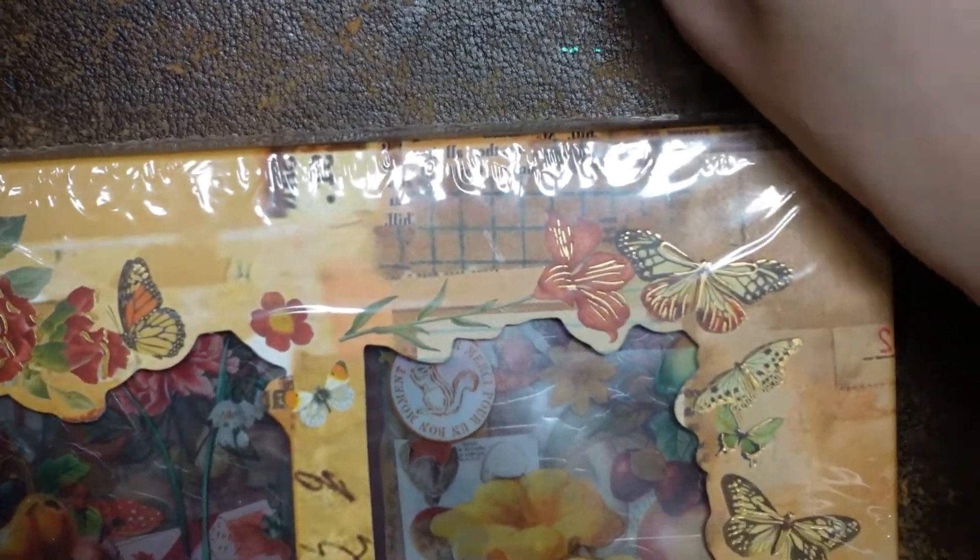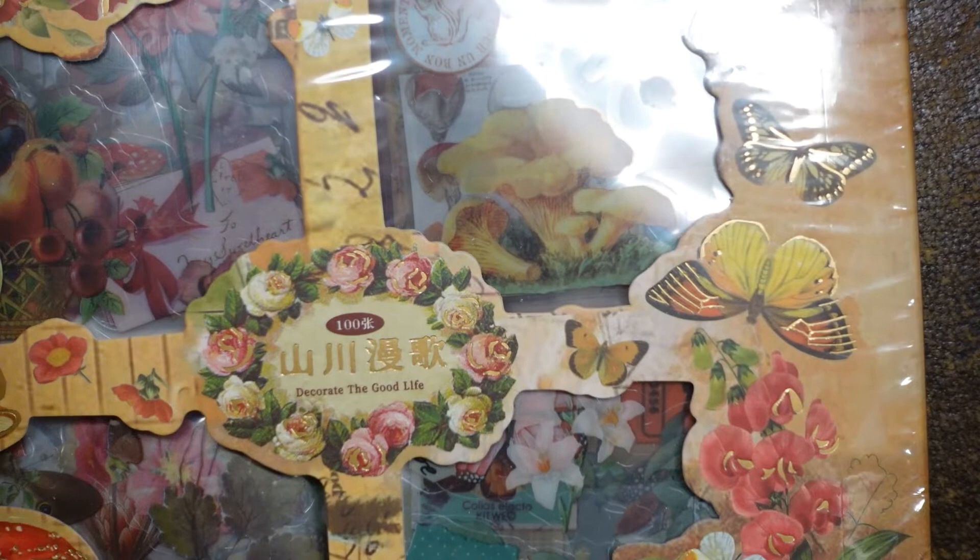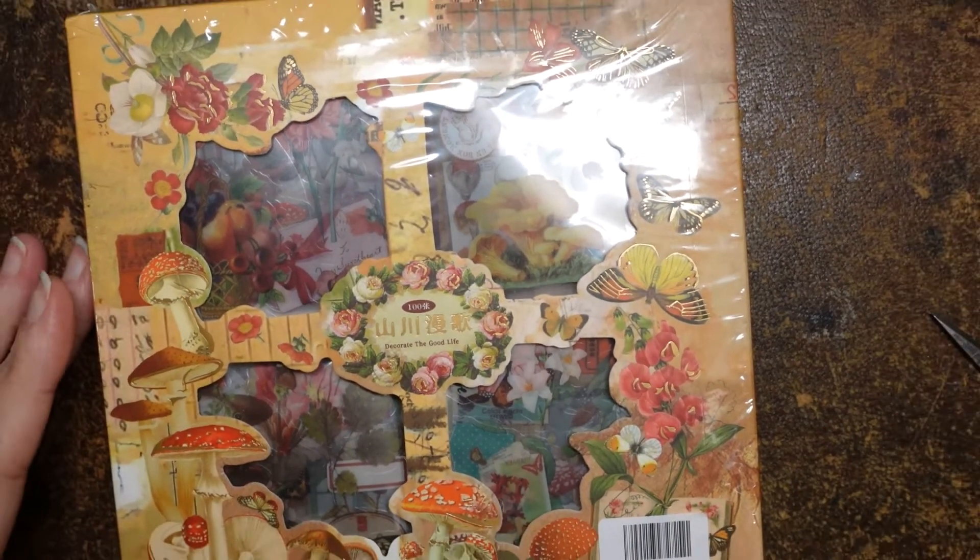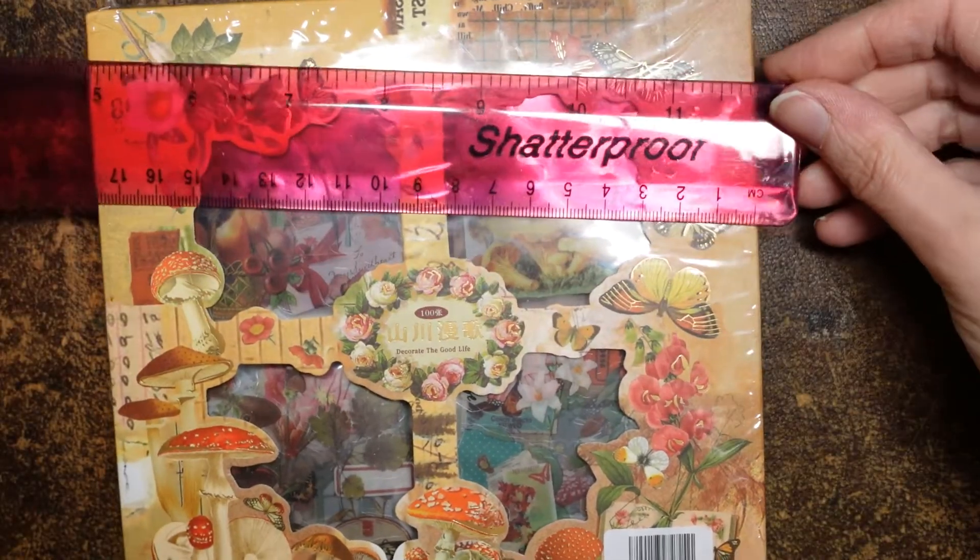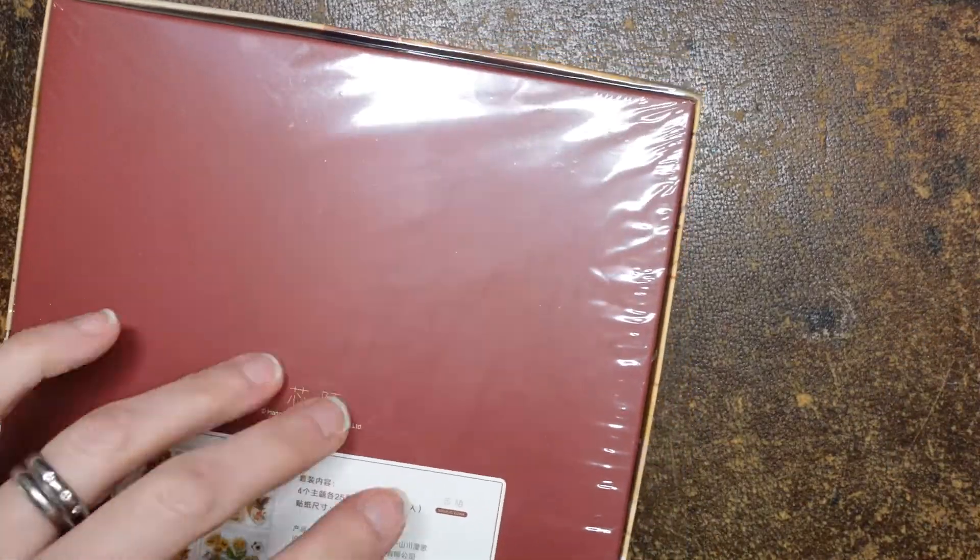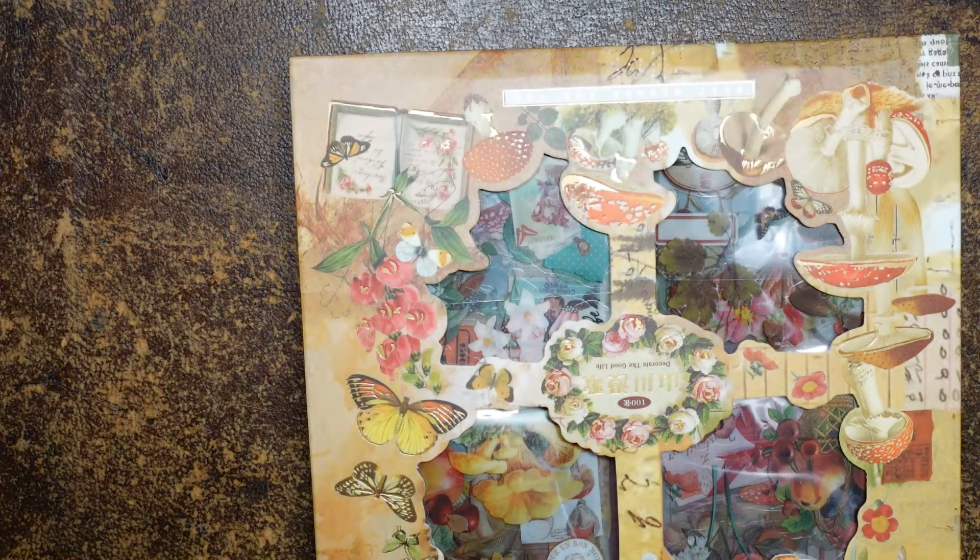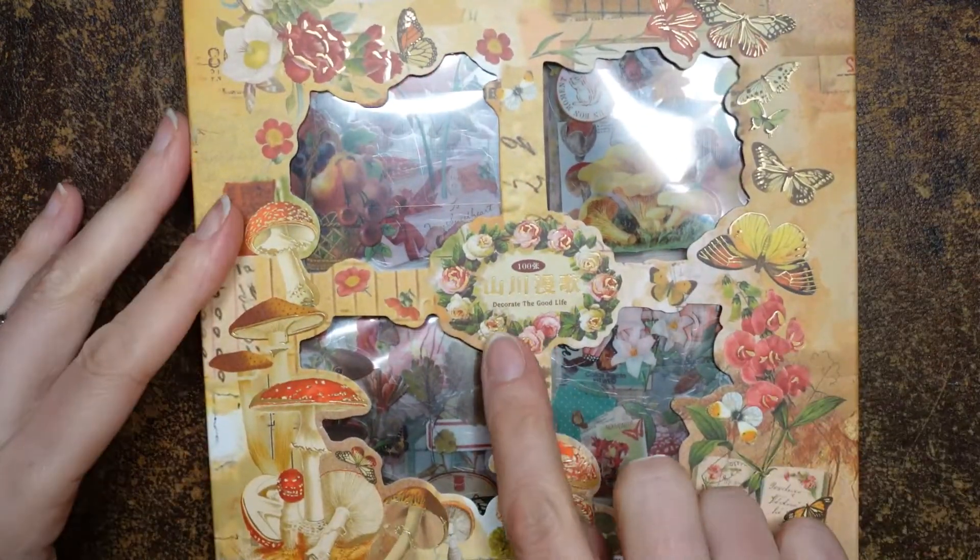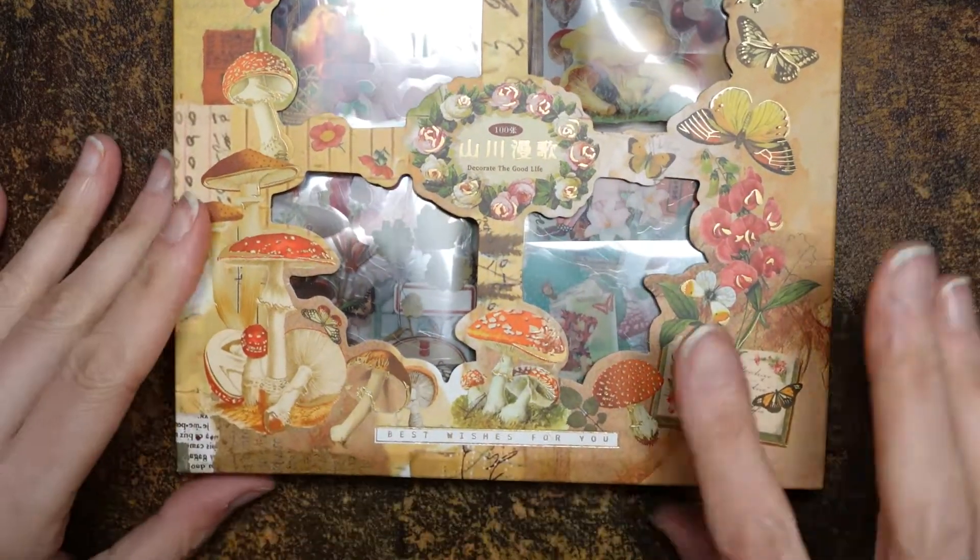But this set is a lot bigger. So this set is, the box is about seventeen and a half centimeters square. It's wrapped in plastic, so I'll need to snip it off. Now you can get stickers like this all over the place. I only bought them from Grabie because I had the voucher. And I've been looking for some, thinking about getting some really for quite a while. But I wasn't sure whether I'd used them. And so when I had a voucher, I thought I would and have a go. So the box is upside down. It says in here, decorate the good life. Best wishes for you. At the bottom, which is cute.